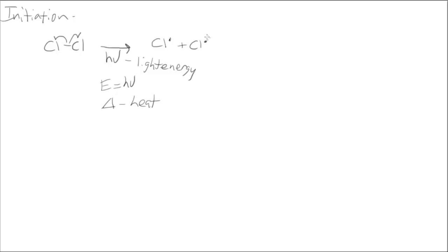And remember that each one of those chlorines also has three lone pairs as well, but what we really care about right now is the radical. So that's an initiation step. We started with no radicals. We end up with two radicals.